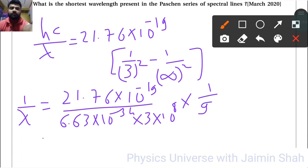So is equal to... now for lambda we have to take reciprocal of this, so 6.63 into 3 into 9 upon 21.76, so that will give us 8.226 into 10 raised to... now see reciprocal of this.